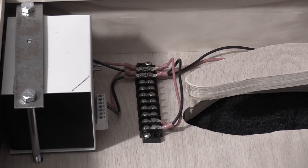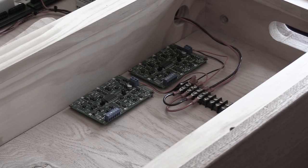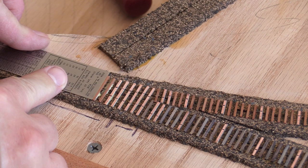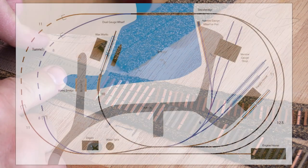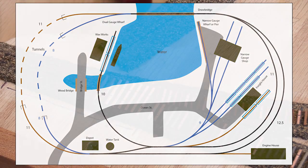In the last episode, I installed a DCC command station, stationary decoders, frog juicers, and some basic wiring for the layout. In the next few episodes, I'm going to work on laying track. Because most of the turnouts and track work have custom geometries, and because of all the dual gauge, I'm going to hand lay the track.